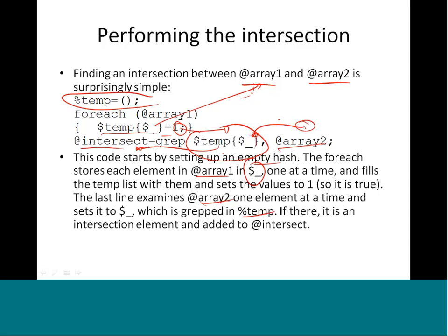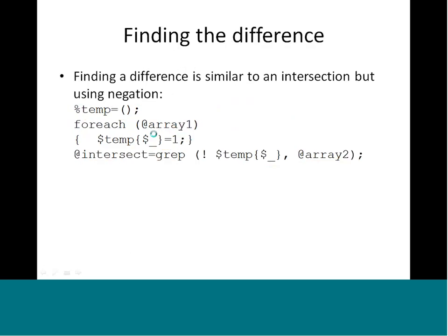To find the difference of two arrays, all we do is negate the search condition. We build the same %temp hash, but then put a bang (!) in front of $temp{$_}. This will give you the difference between the two arrays - whichever elements are in array two but not in array one will show up in the result array.